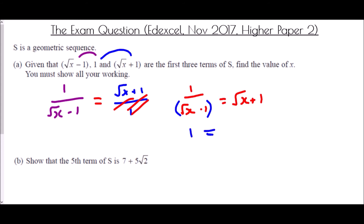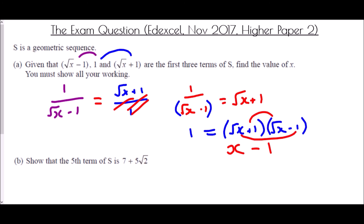Setting them equal: 1/(√x − 1) = (√x + 1). Multiplying both sides by (√x − 1): 1 = (√x + 1)(√x − 1). This is a difference of two squares: √x × √x = x, and +1 × −1 = −1, with the cross terms cancelling. So 1 = x − 1, and therefore x = 2.